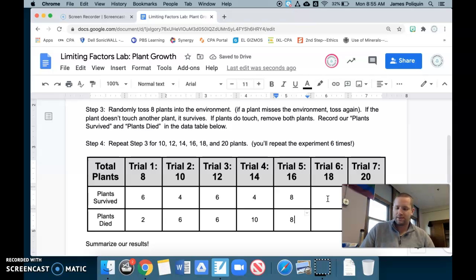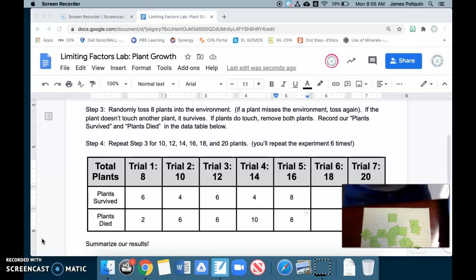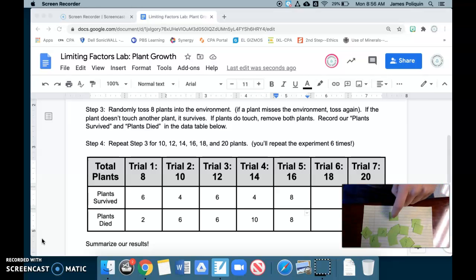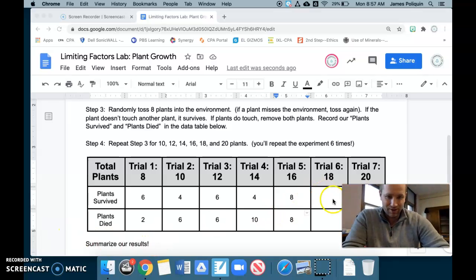Wipe the board. Repeat for trial six. Trial six, we have 18 plants that we are going to toss in. So here's what happened when we tossed 18. So let's start with the ones that aren't touching anything. One, two, three, four are not touching. So that means four out of 18 survived. Yikes. So if four survived out of 18, that means 14 of them died. Yikes.